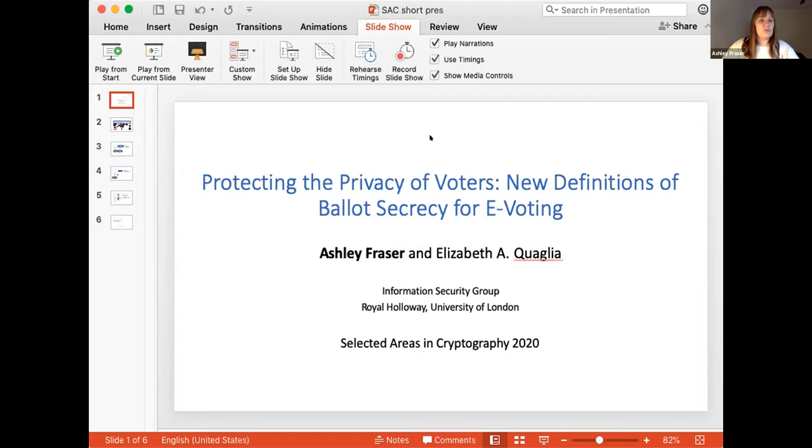Ballot secrecy is intuitively the property that a voter's vote remains secret throughout the election, except when the result of the election reveals the vote. To capture this formally, we consider an e-voting scheme in which voters register to vote and then obtain credentials from a registrar, submitting ballots linked to their credentials to a ballot box. The manager of the ballot box processes ballots and provides a public view of the ballot box known as the bulletin board, and eventually the tallier computes and publishes the result of the election. Our three definitions consider three potential attack scenarios. Our first definition is set in the honest model.